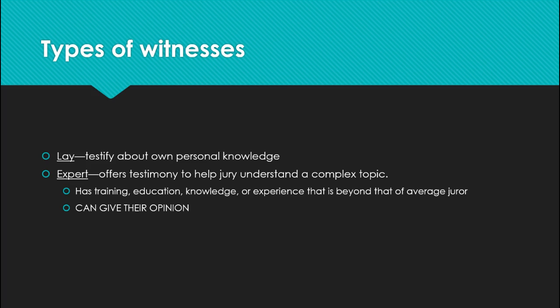There are two major types or categories of witnesses. One is called a lay witness or percipient witness — like a witness to a car accident, somebody who saw the accident happen. It's within their personal knowledge: they saw it, they heard it, they know about it because they were there. An expert is different.